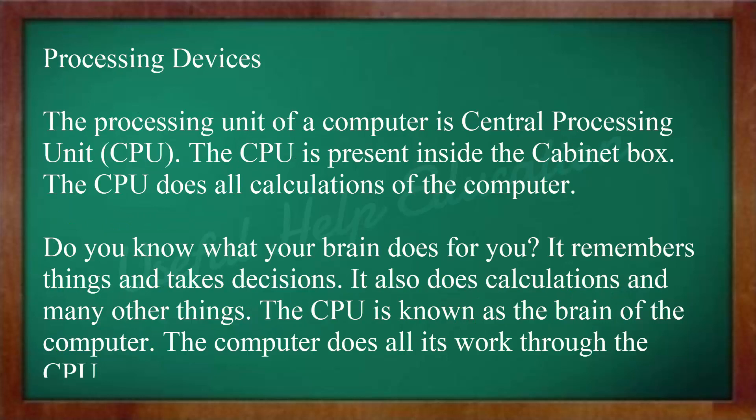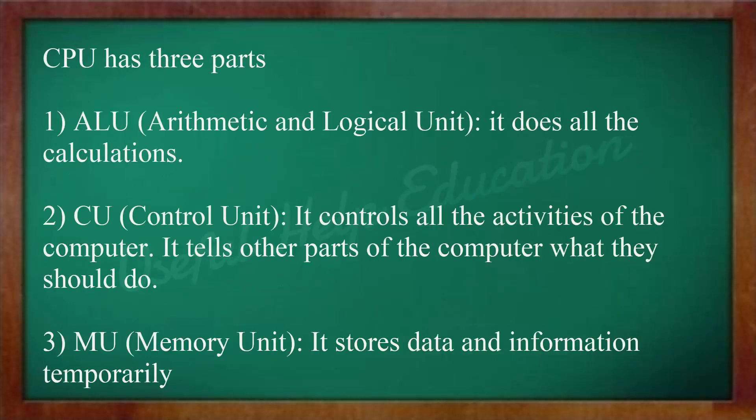Processing Devices: The processing unit of a computer is the Central Processing Unit, CPU. The CPU is present inside the cabinet box and does all calculations of the computer. Just as the brain remembers things, takes decisions, and does calculations, the CPU is known as the brain of the computer. The computer does all its work through the CPU. CPU has three parts: ALU (Arithmetic and Logical Unit), which does all the calculations; CU (Control Unit), which controls all the activities of the computer and tells other parts what they should do.